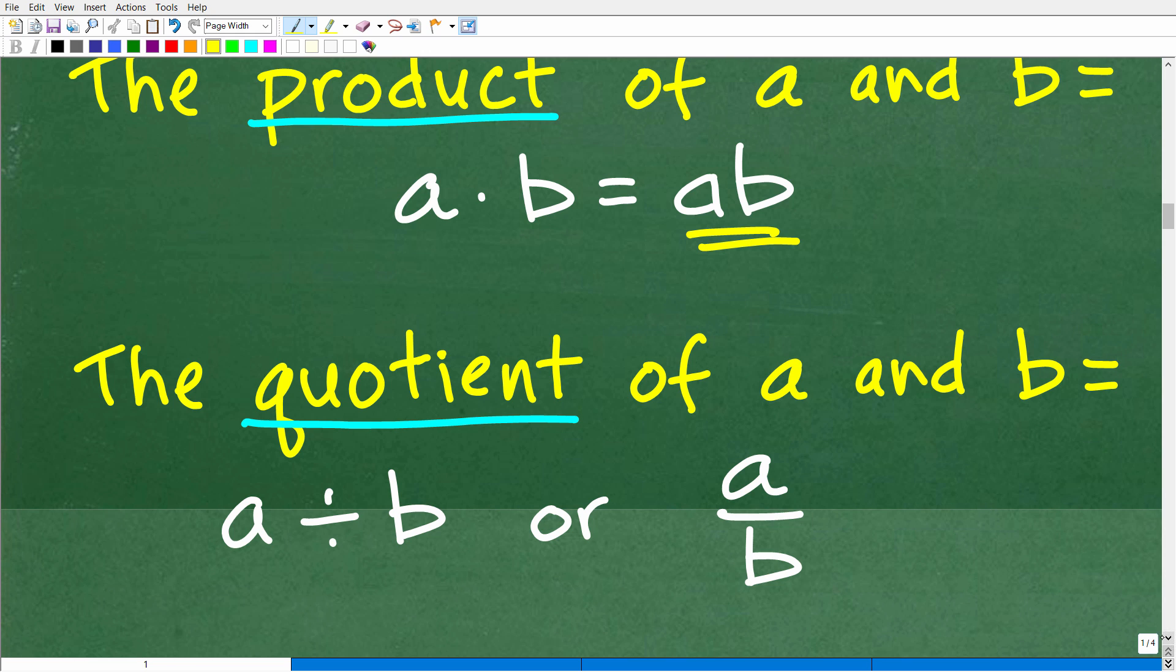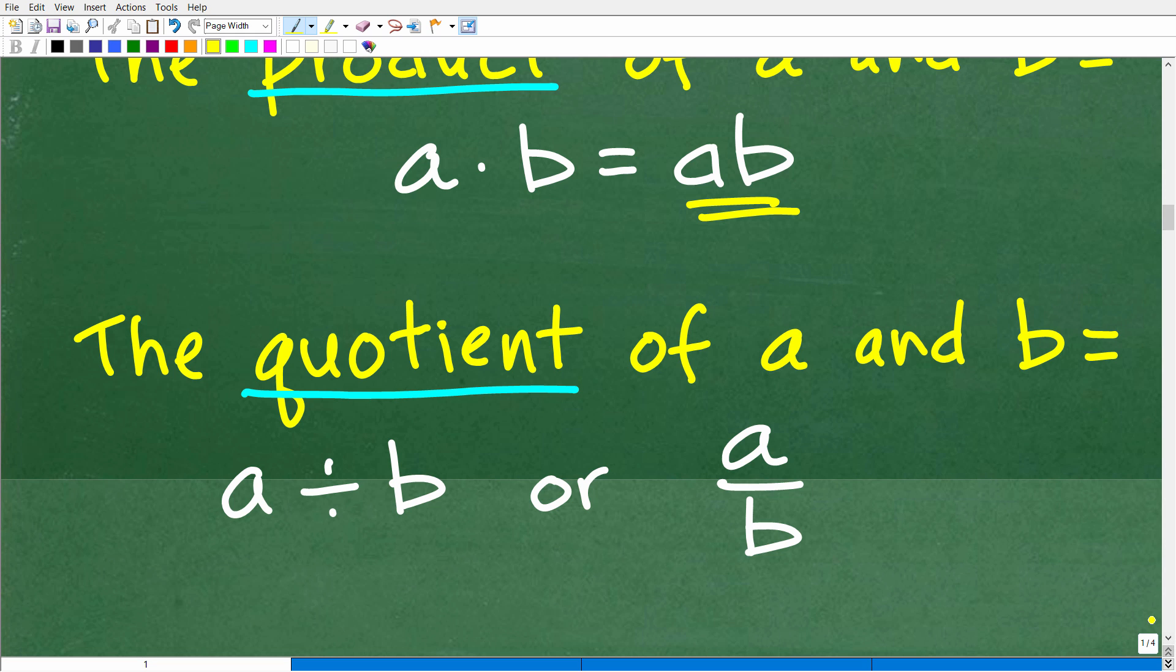Alright. So that's the product of A and B. Pretty straightforward stuff. And here is another one that seems to give people problems just because they kind of forgot what the quotient is. This is kind of like the difference. But the quotient of A and B, again, this has specific order. That means A divided by B. Now, we could write this as a fraction A divided by B or A divided by B like this. That is the quotient.